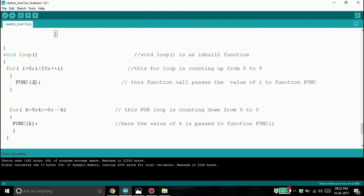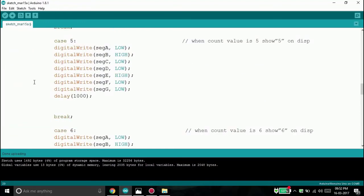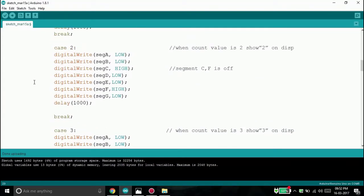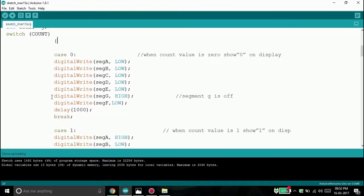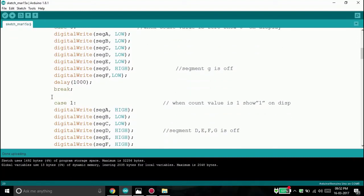Now what is happening in this for loop? We have i equal to 0 which is passed to the function func. When the value of i is passed 0 here, this is assigned to the switch variable count and correspondingly the case 0 is executed.